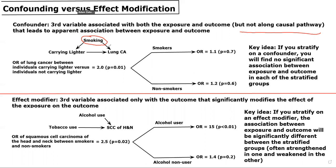The way that you can really investigate this statistically is through stratification. If you first perform an unadjusted analysis looking at the odds ratio of lung cancer between individuals carrying a lighter compared to those not carrying a lighter, you might find an odds ratio of 2 — meaning individuals carrying a lighter have two times the odds of lung cancer — and this is statistically significant with a p-value less than 0.05. If we then stratify into smokers and non-smokers, if smoking is indeed a confounder, we would expect the association between carrying a lighter and lung cancer to disappear within each of these groups.